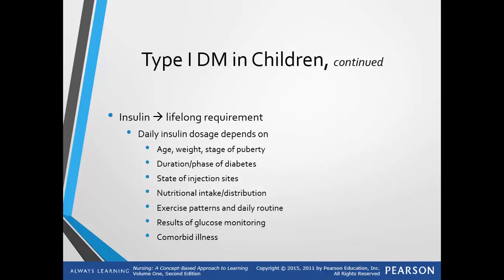Continuous subcutaneous insulin infusions have become more popular with young individuals. They have what's called a correction factor — the additional amount of insulin needed to be given with meals based on the child's pre-meal blood glucose level in order to reach the post-meal glucose target level. The child and parent will learn how to adjust the amount of rapid insulin necessary to cover the carbohydrate intake at a meal.